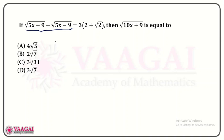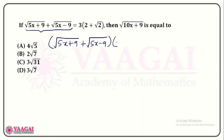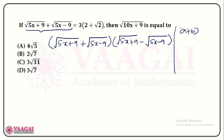I'm going to start with the expression on the left hand side: root of 5x plus 9 plus root of 5x minus 9. We'll multiply this with its conjugate, which is root of 5x plus 9 minus root of 5x minus 9. This is in the form of (a + b)(a − b), a very frequent algebraic identity.